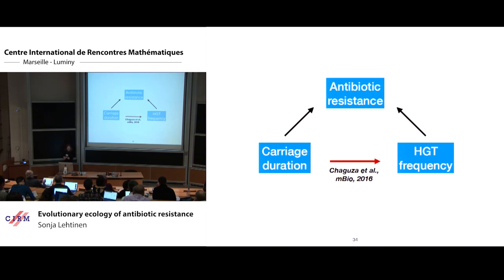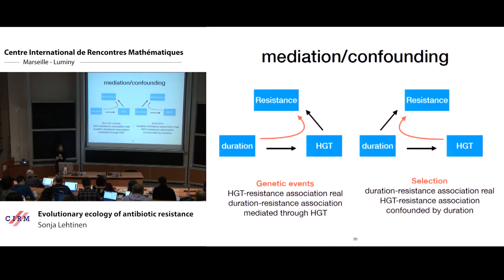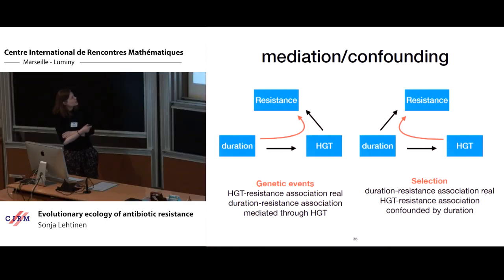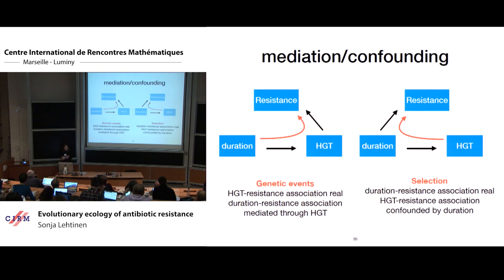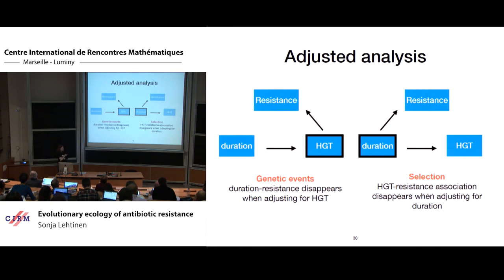It might be that the association between resistance and horizontal gene transfer is causal, but the association between duration and resistance is not actually causal but mediated through horizontal gene transfer — or alternatively the association between resistance and horizontal gene transfer is mediated through the common cause of duration of carriage. In an attempt to untangle where the causal associations lie, we performed an analysis where we adjust for the possible confounding variable, with the idea being that if that variable is truly a confounder or common cause, then the spurious association should not be observed.